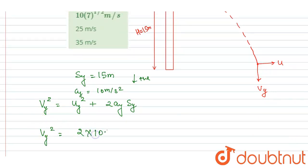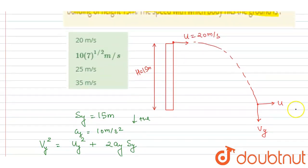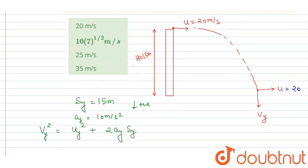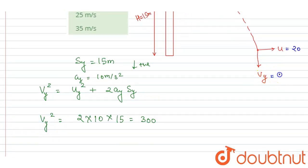So putting the value here, uy is 0, so I will write vy squared is equal to 2 into 10 into 50, so it is 300. 300 is the vy squared. So we want the velocity with which it will hit the ground. So this is 20 and this is under root 300.